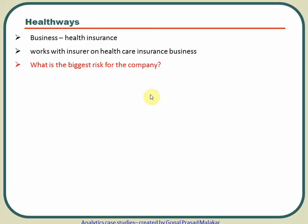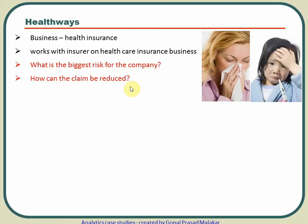What is the biggest risk for the health insurance provider? The biggest risk is people falling sick, because when people are sick, only then will they make a claim. If they are not sick, they will not claim. So Health Wage is working with health insurance providers whose biggest risk is people falling sick, because that's where the claims come from.